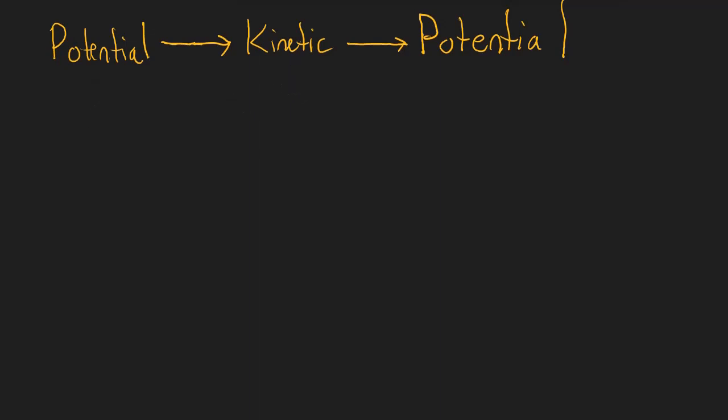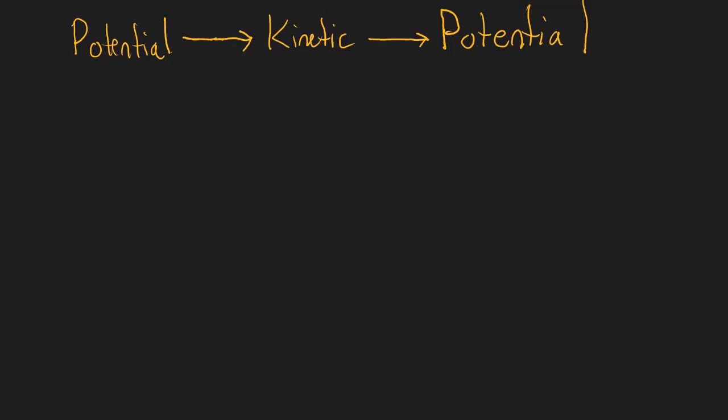Here are the equations the MCAT wants us to know as far as potential and kinetic energy. There are two equations for potential energy. The first one is potential energy equals mgh. The other equation is potential energy equals one-half kx squared. And for kinetic energy, the equation is kinetic energy equals one-half mv squared.